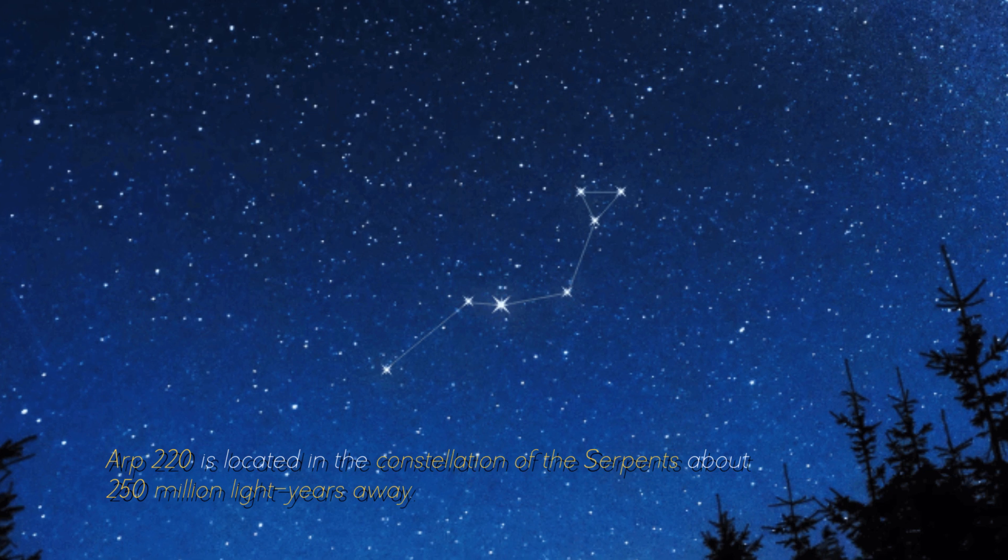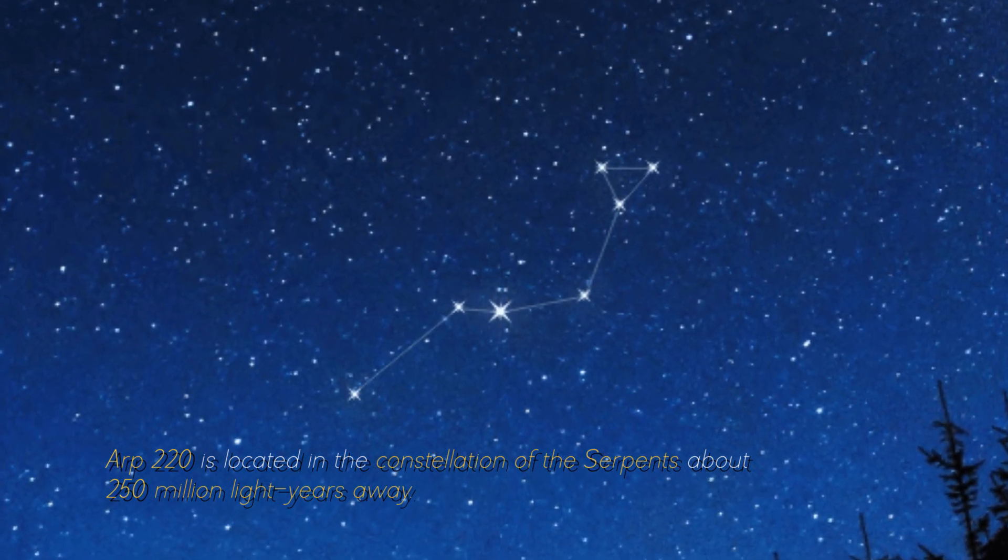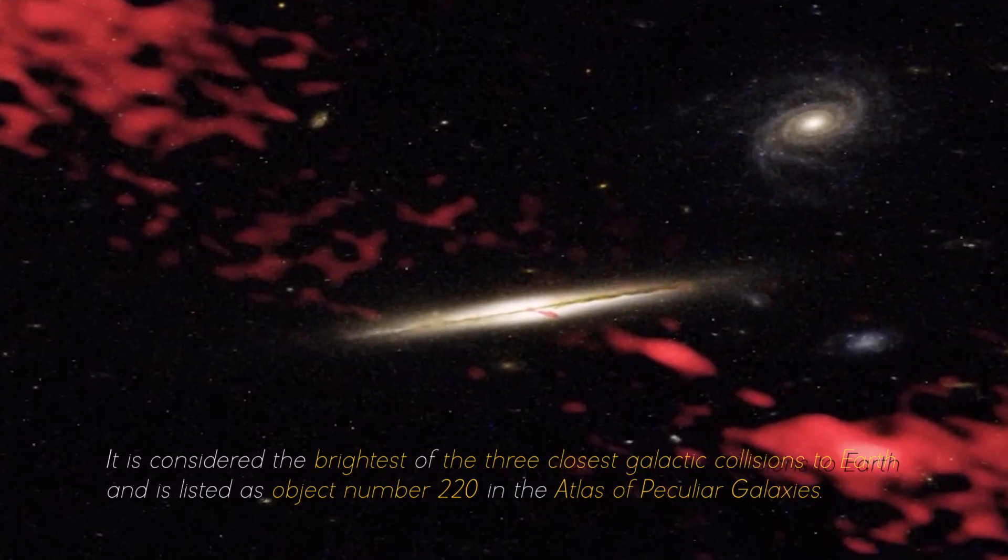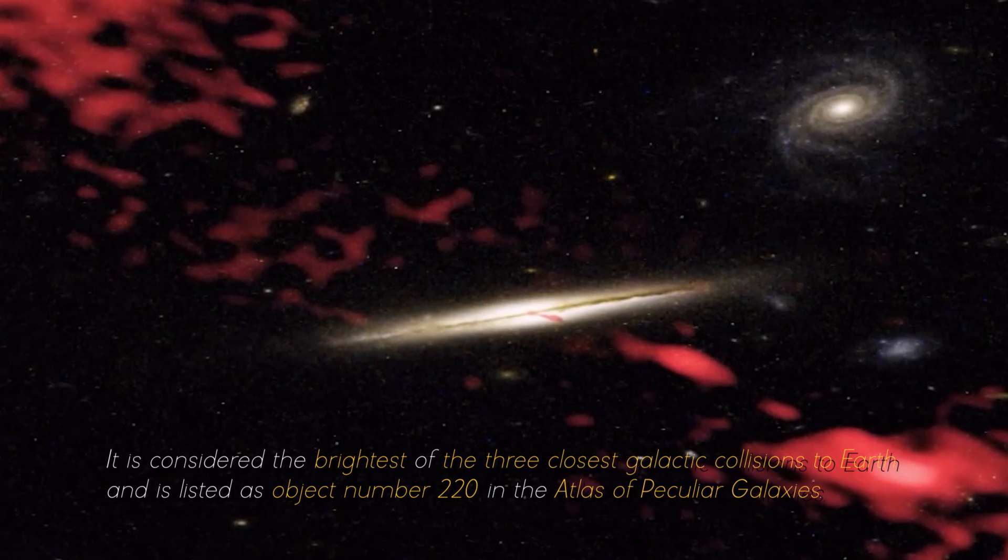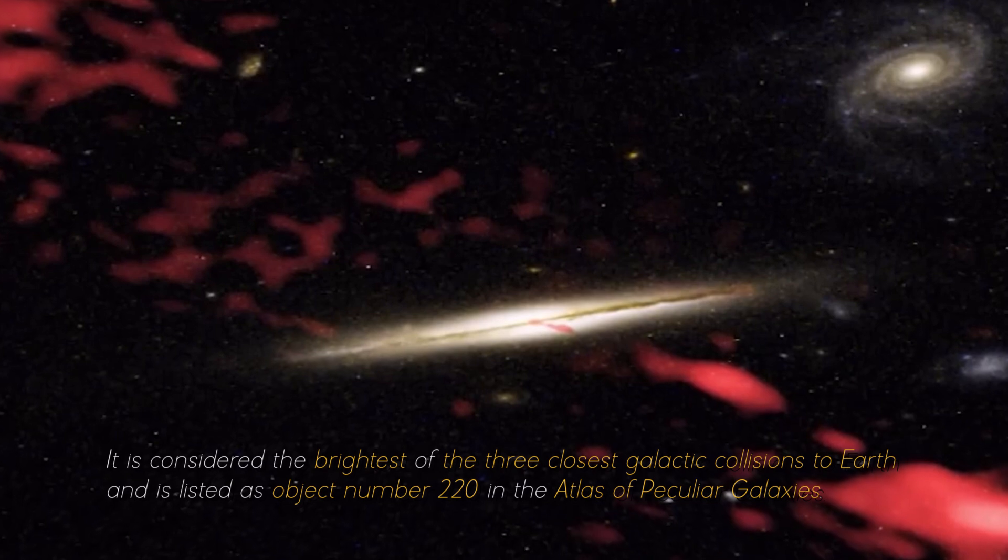ARP 220 is located in the constellation of the Serpents, about 250 million light years away. It is considered the brightest of the three closest galactic collisions to Earth, and is listed as object number 220 in the Atlas of Peculiar Galaxies.